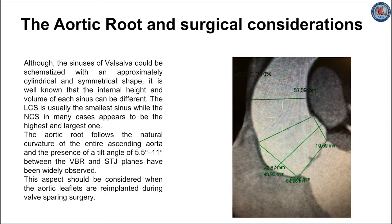It is well known that the internal height and volume for each sinus could be different. The left coronary sinus has been systematically found to be the smallest sinus, while the right coronary sinus was found to be similar to the non-coronary sinus, which in many cases appeared to be the tallest and largest one. The aortic root follows the natural curvature of the entire ascending aorta, and the presence of a tilt angle of 5.5 to 11 degrees between the virtual basal ring and the sinotubular junction planes has been widely observed.